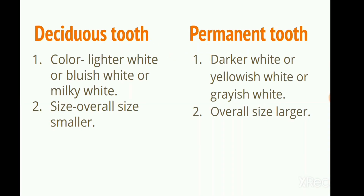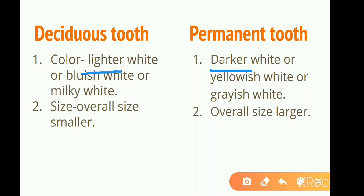Number 1: Color. The color of deciduous teeth is lighter, but the color of permanent teeth is darker. Specifically, deciduous teeth have a lighter white, bluish white, or milky white color, while permanent teeth have a darker white, yellowish white, or grayish white color.